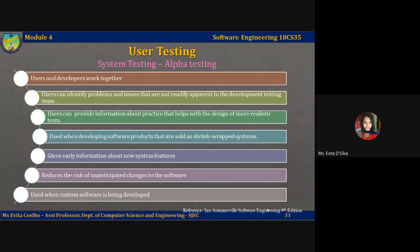Alpha testing is often used when developing software products sold as shrink-wrapped systems. Users of shrink-wrapped systems may be willing to get involved in alpha testing because it gives them early information about new system features. It also reduces the risk that unanticipated changes to the software will have disruptive effects on their business, since users are involved right from the testing. Corrections can be made then and there, and if the system delivers something the user does not like, feedback is obtained immediately and can be incorporated.